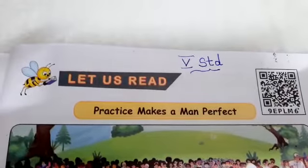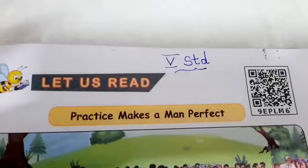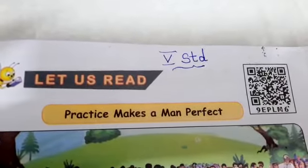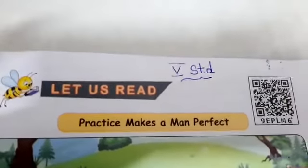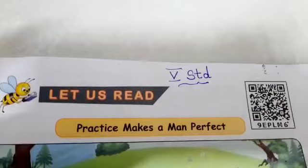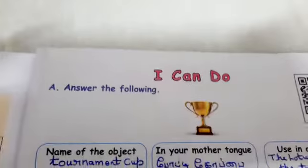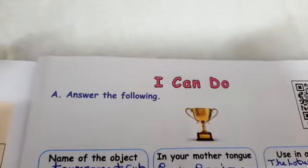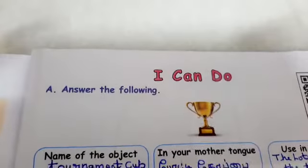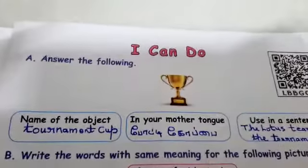Hi students, today we are going to see the fifth standard English book back exercises, page number 115. I can do it. Answer the following: they are given a picture for you and you name the object — tournament cup.